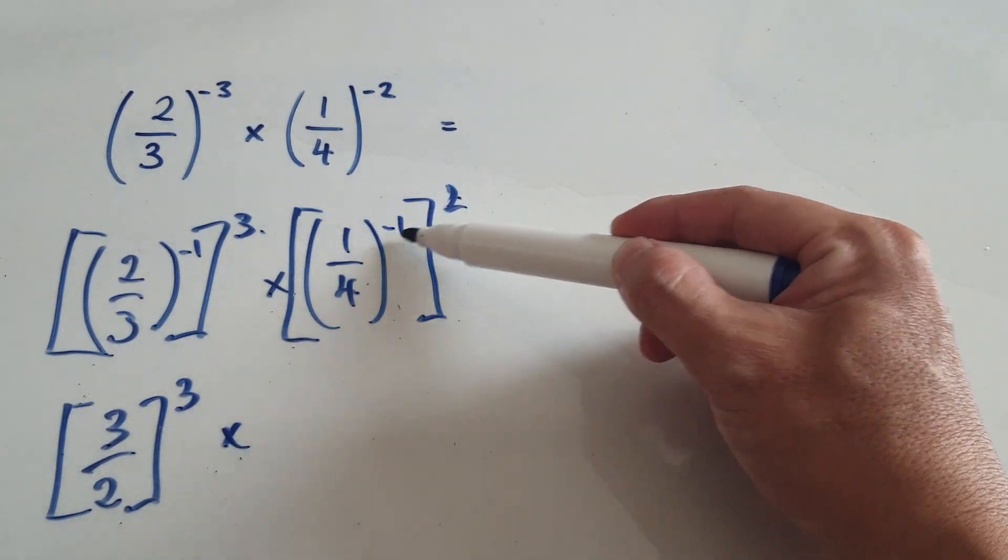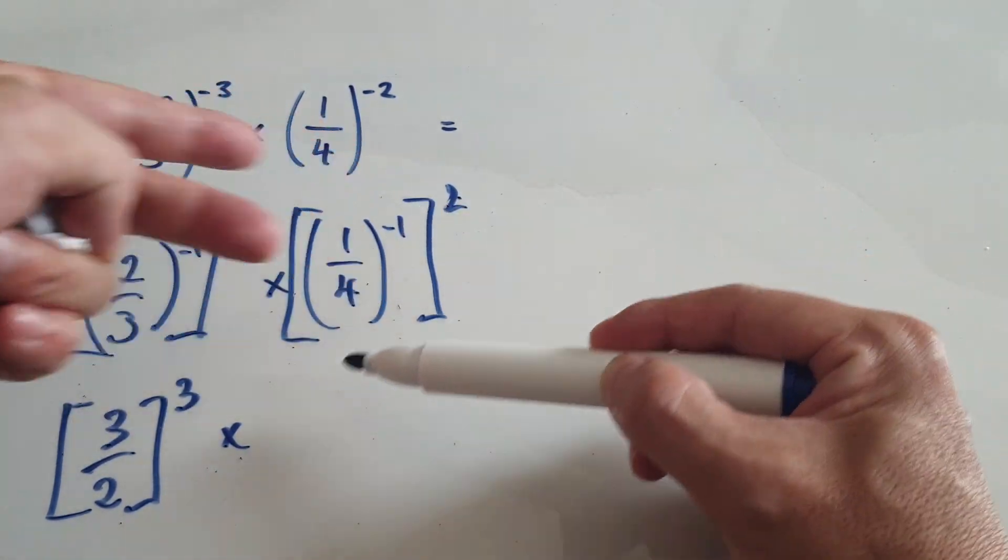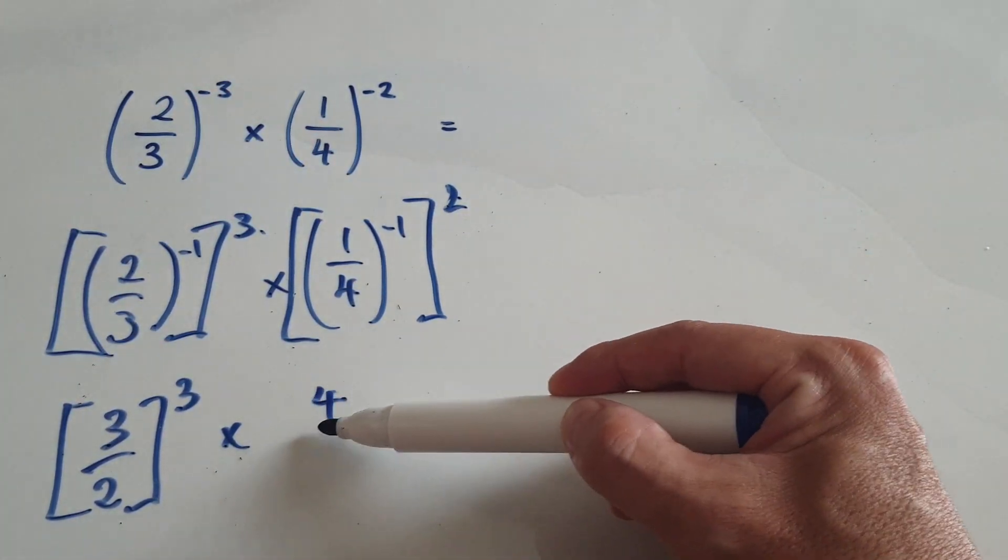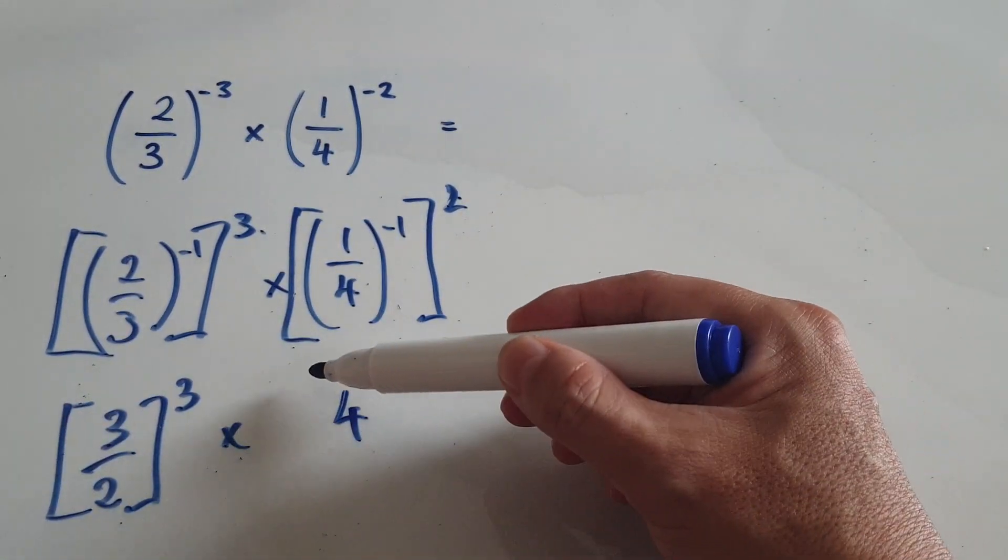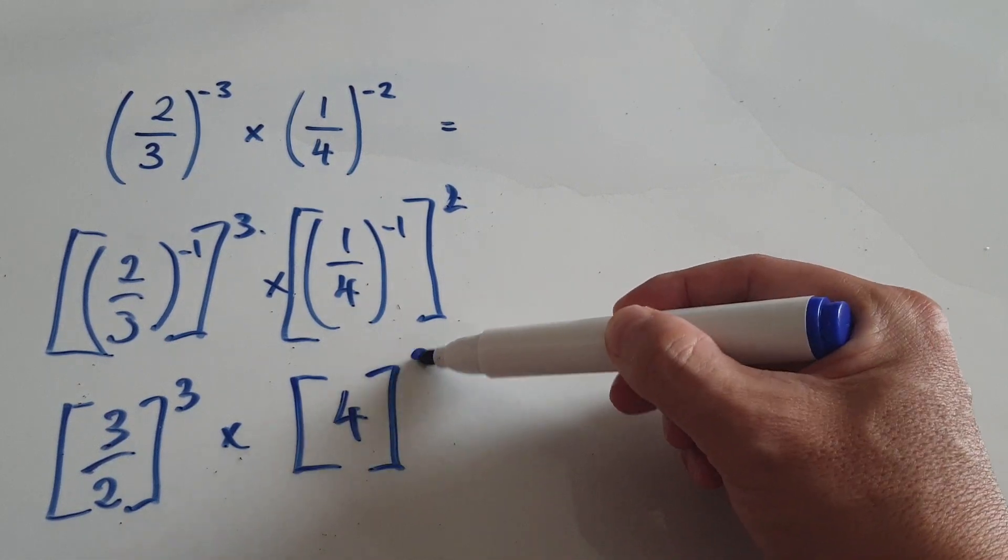And then to the power of negative 1, basically turn it upside down, which will be 4 over 1. But 4 over 1 is just 4. So this will be 4 to the power of 2.